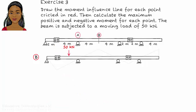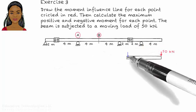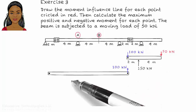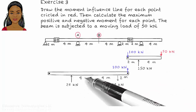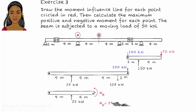To determine the maximum positive moment at B, place the load at the right end of the beam and analyze it. Therefore, the maximum positive bending moment at B is 100 kNm.